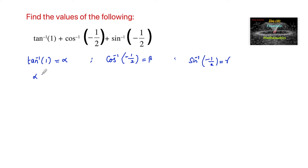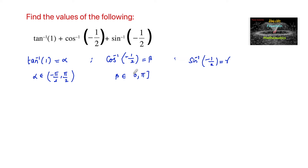Here alpha must belong to minus pi by 2 to plus pi by 2, because the principal range of the tan inverse function is minus pi by 2 to plus pi by 2. Beta belongs to zero to pi, and gamma must belong to minus pi by 2 to plus pi by 2.